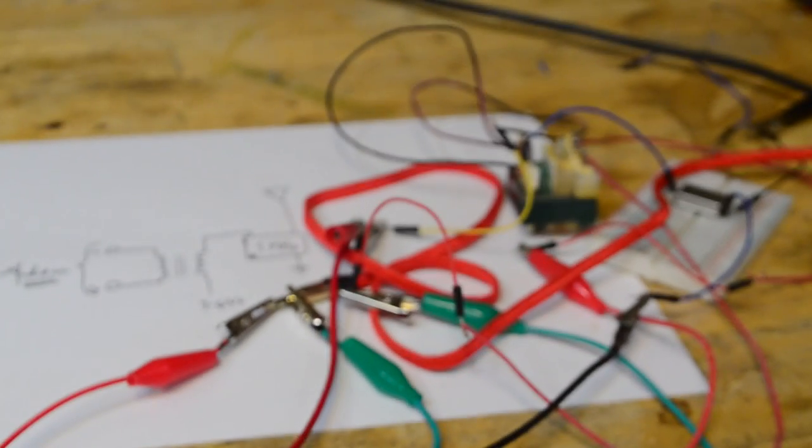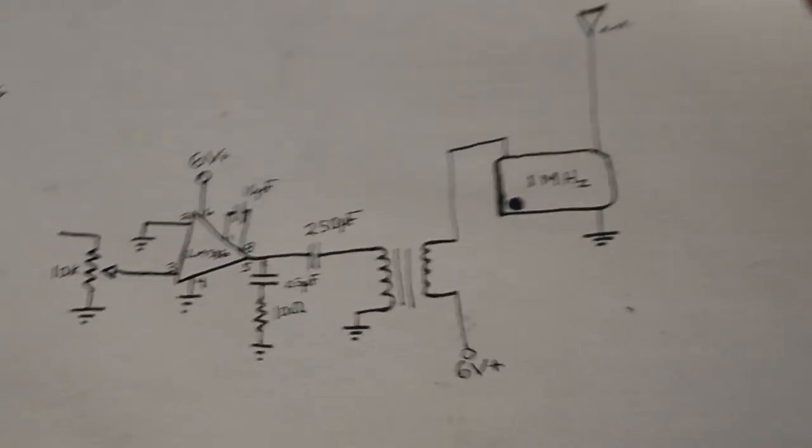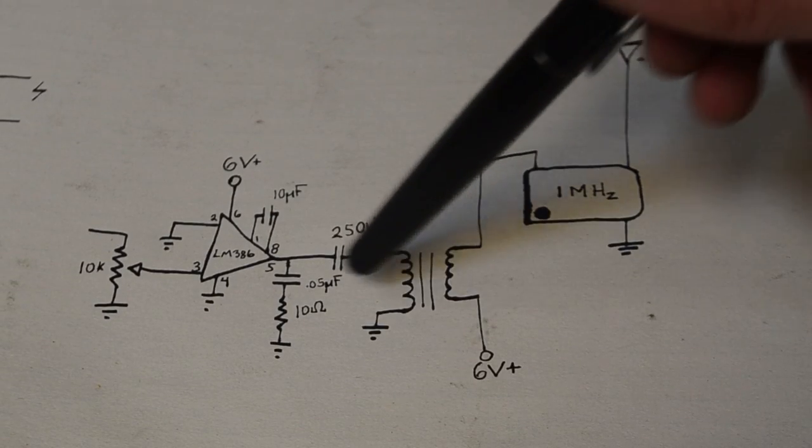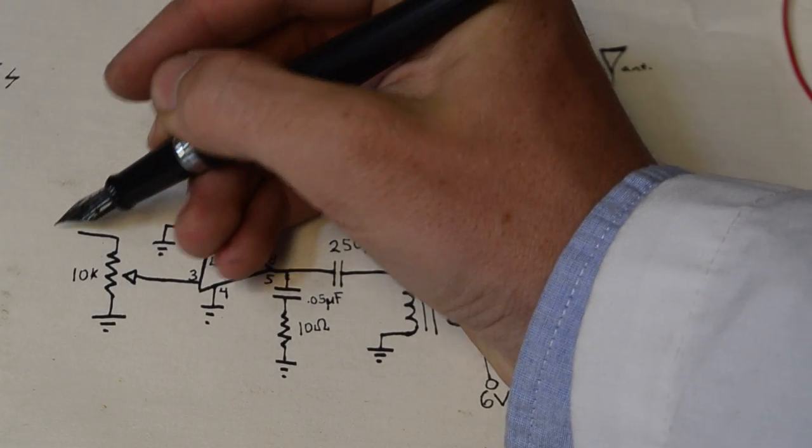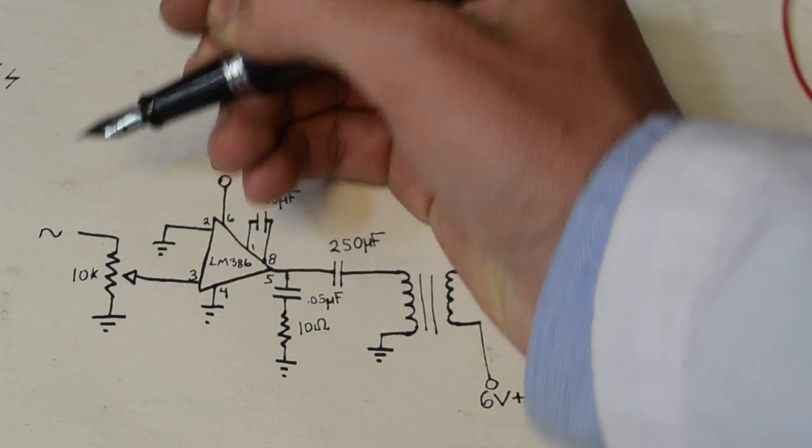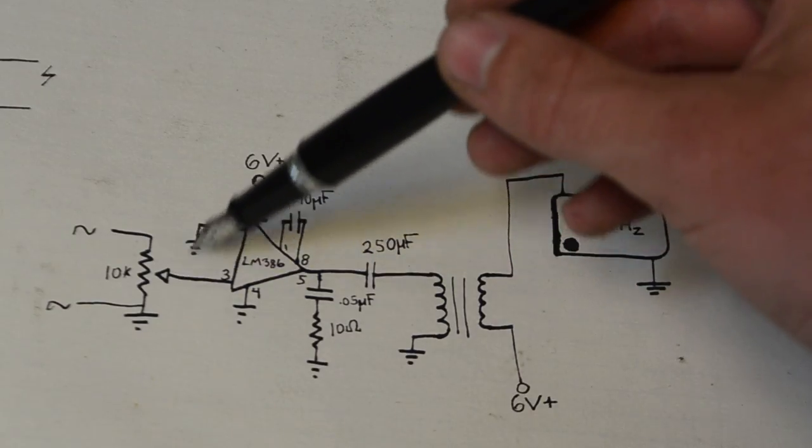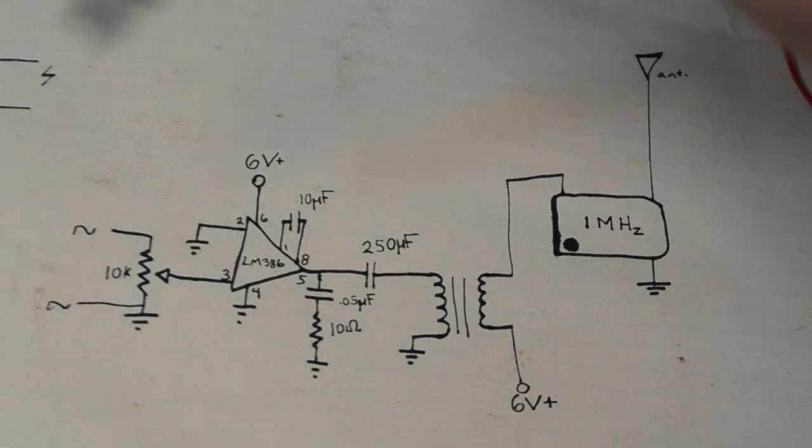So now one question you may be wondering is how can I change the transmitting volume on this? To answer that we can use a circuit like this. As you can see it is a bit more complicated than the last circuit we used which is primarily just this and our audio input. However if you were to use this circuit the audio input would go in here and then the other end of the audio input would just be connected to ground. From the circuit by tuning this potentiometer you can adjust the volume transmitted through this.